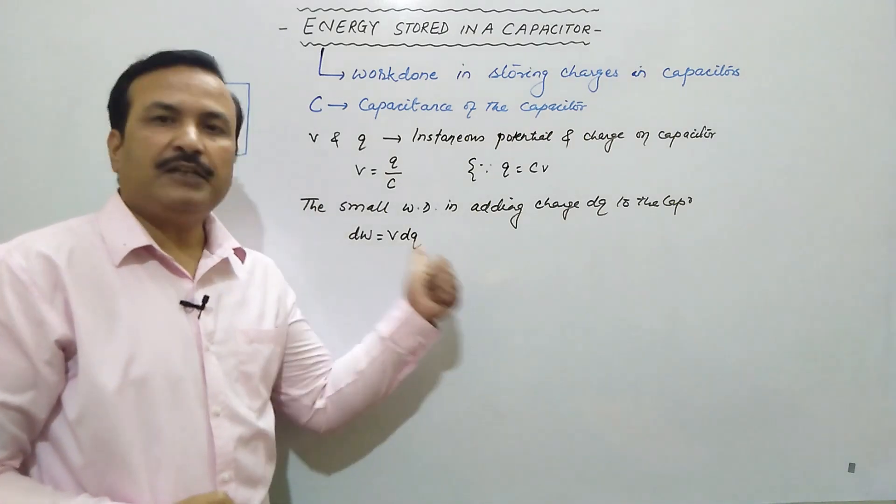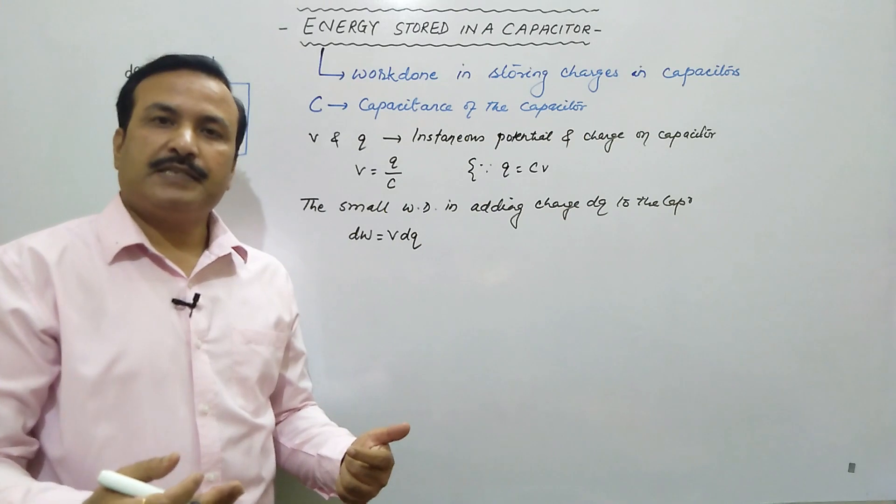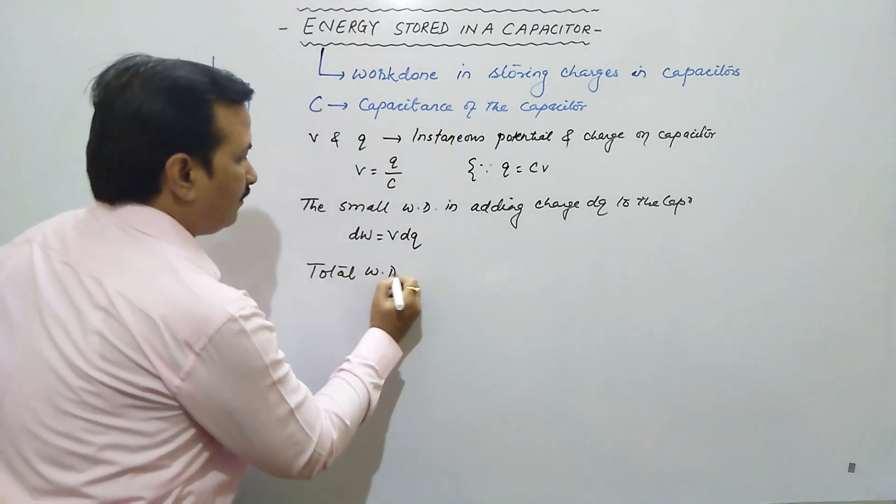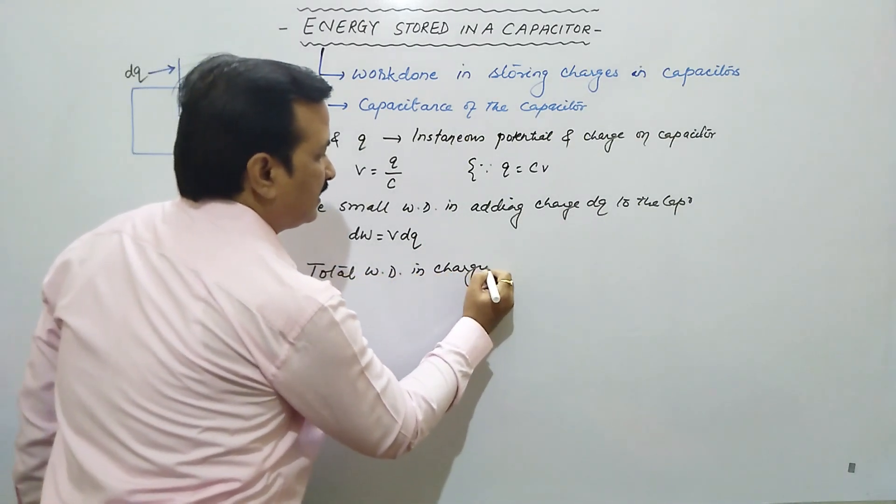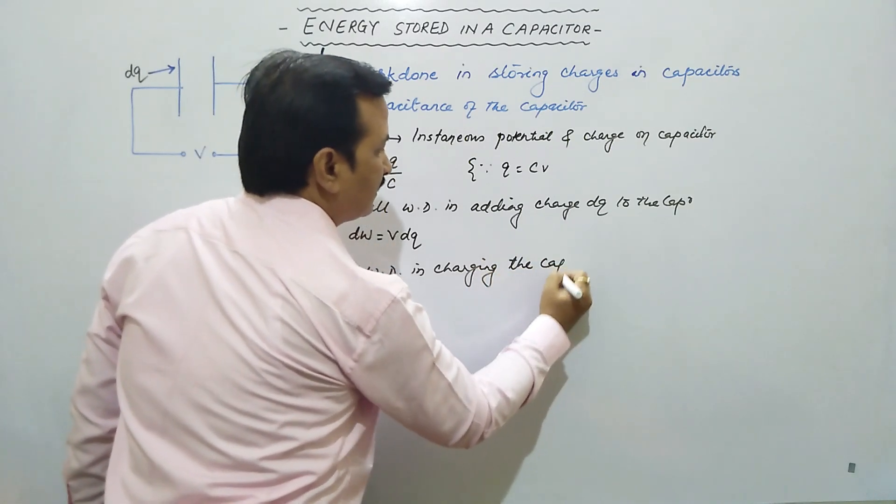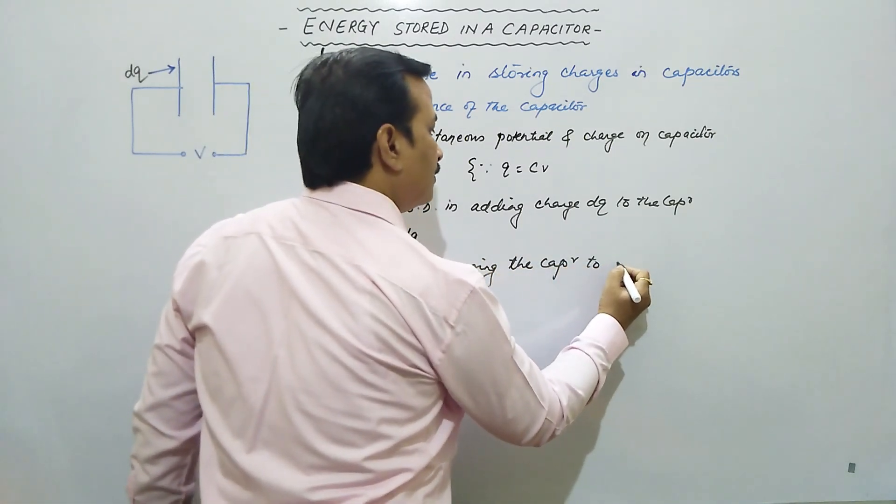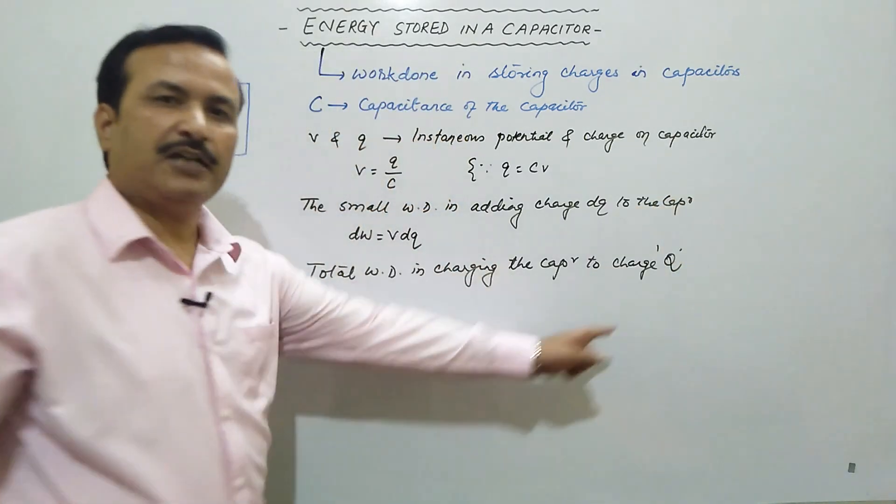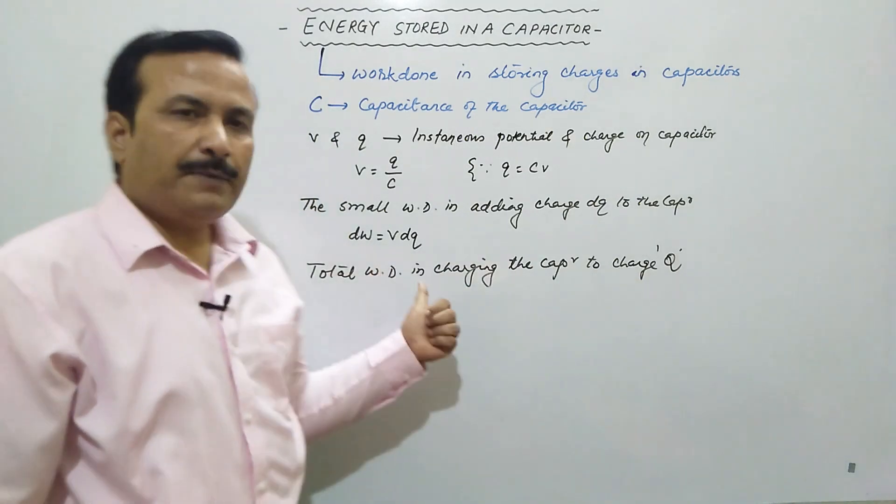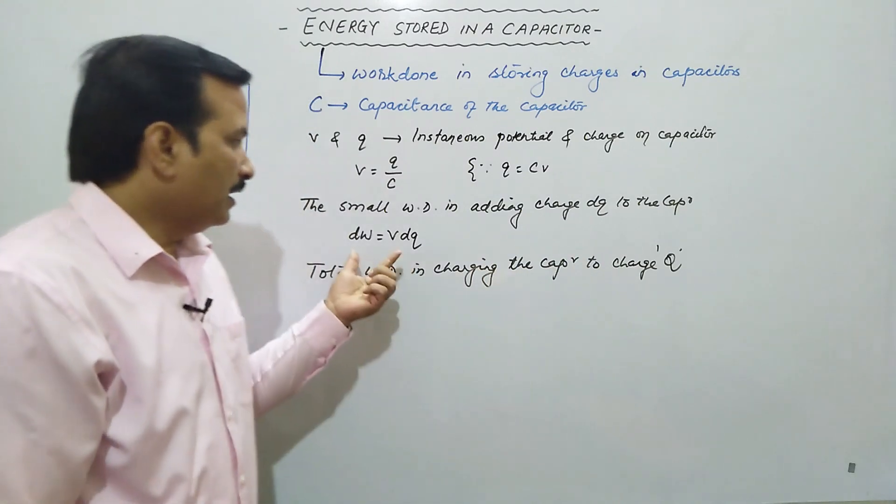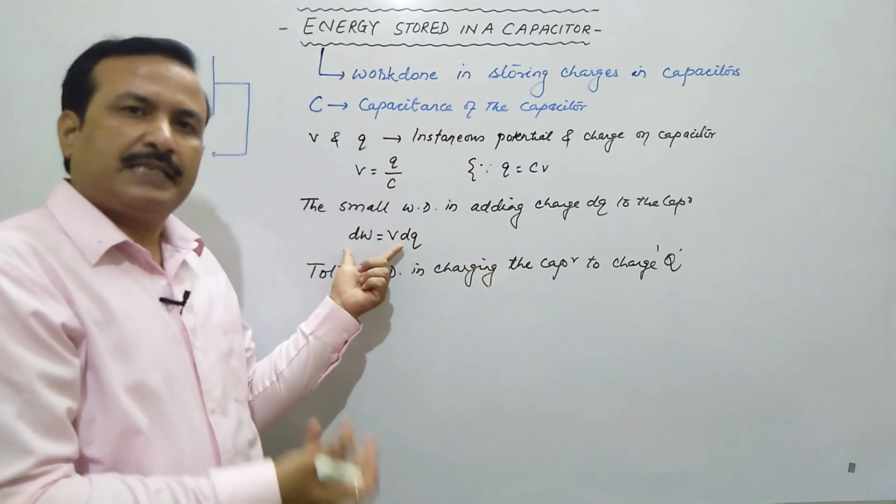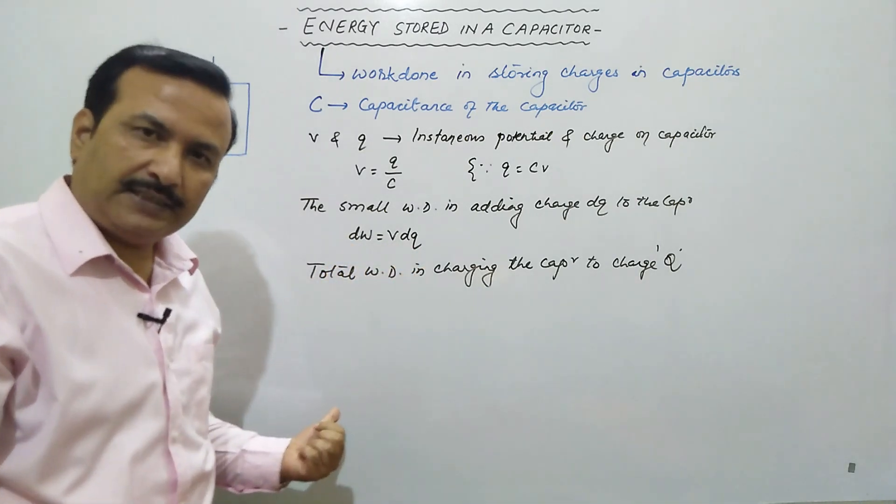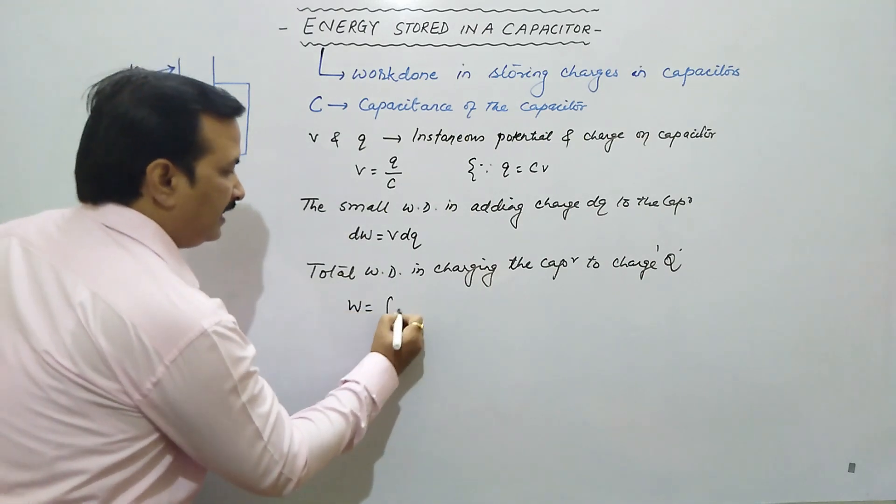Now we need to find what will be the total work done in charging the capacitor to some value Q. So total work done in charging the capacitor to charge Q - we want to store that much charge in it. Now we will see how to find total work done. We have used this many times since class 11. If small work done is given and we need to find total, what do we do? We do integration.